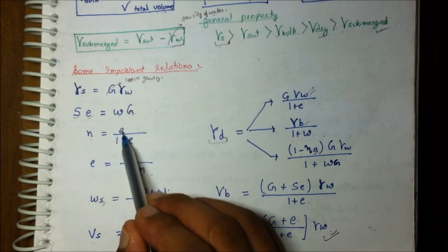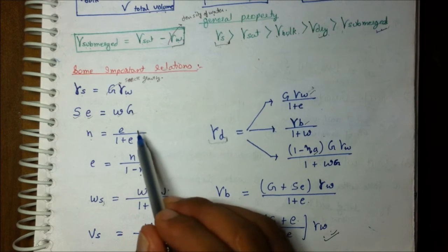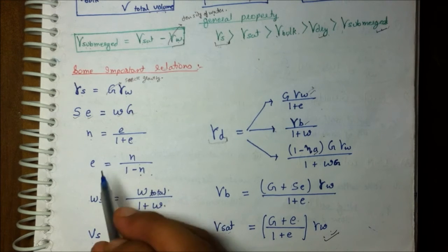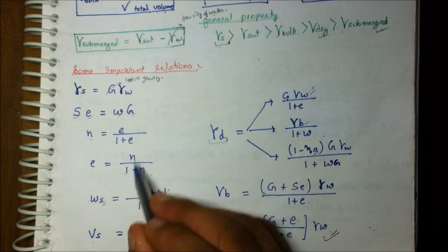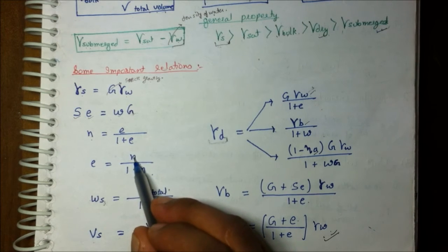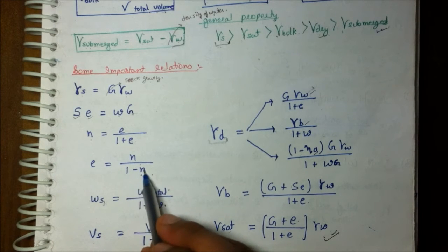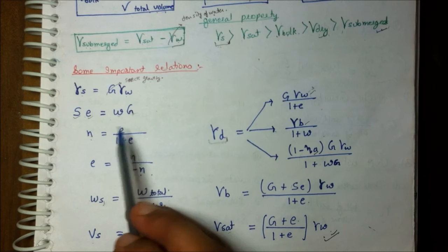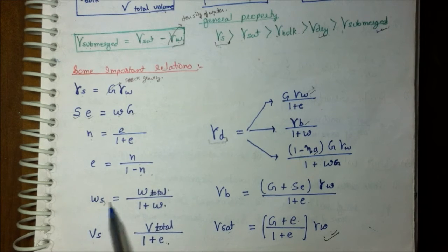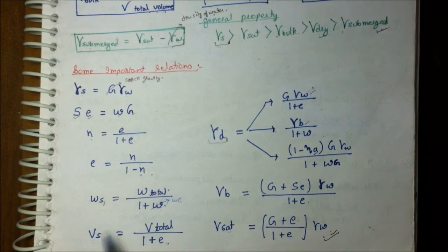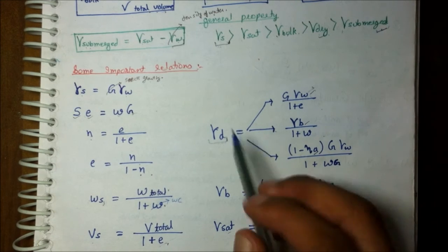Because E comes before N, E is less than N. So E upon (1 plus E) gives N. Conversely, void ratio E equals N upon (1 minus N). Weight of solid equals W_total upon (1 plus w), where small w is water content. Volume of solid equals V_total upon (1 plus void ratio).